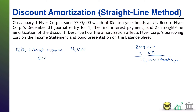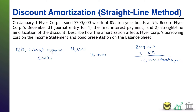That means cash is going out $16,000. Had we simply accrued instead of paying cash, we would have put interest payable here and then paid that payable off later. That's the interest portion of this journal entry.